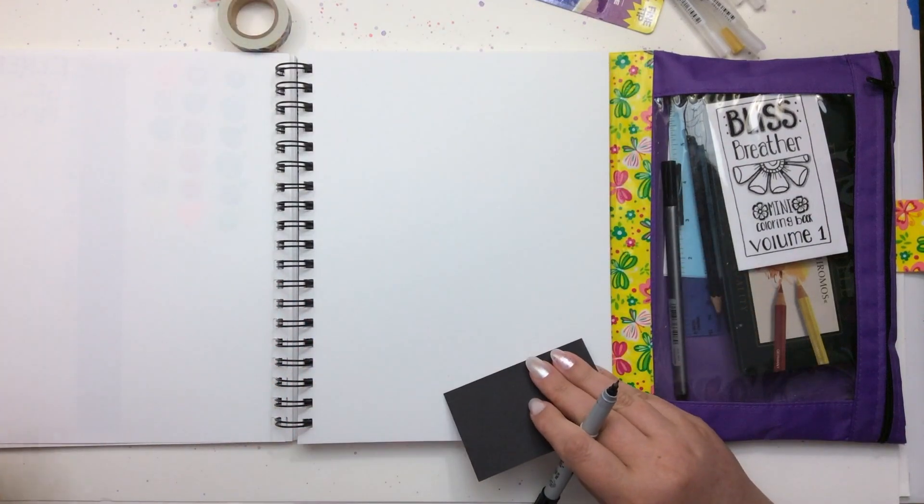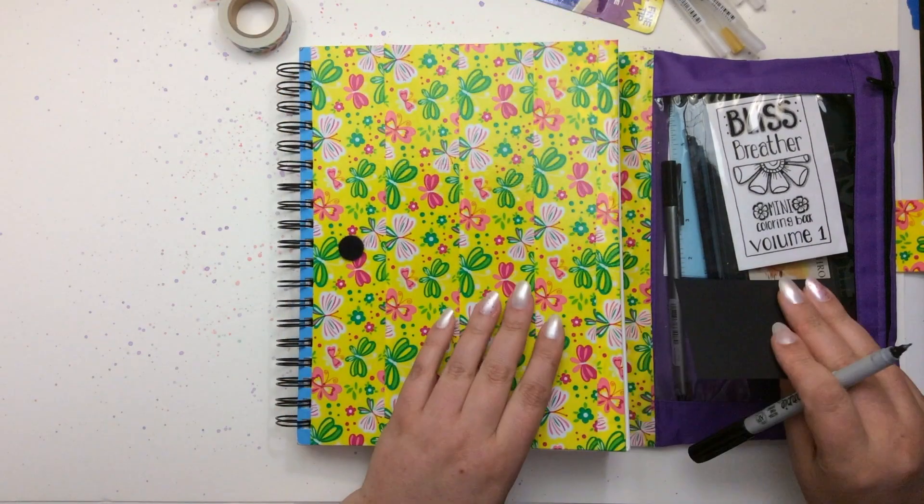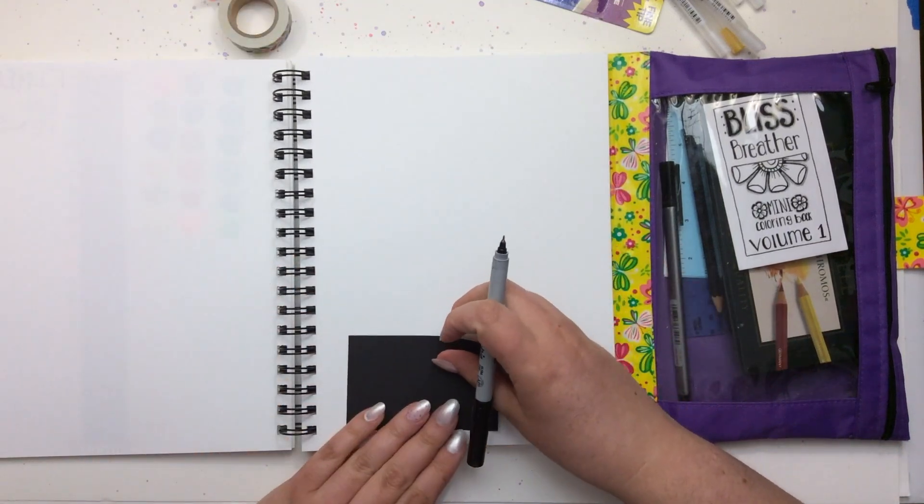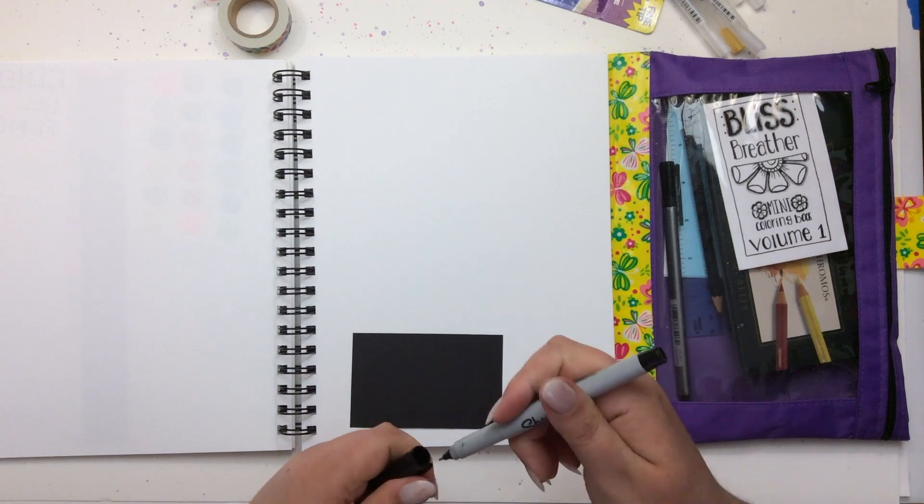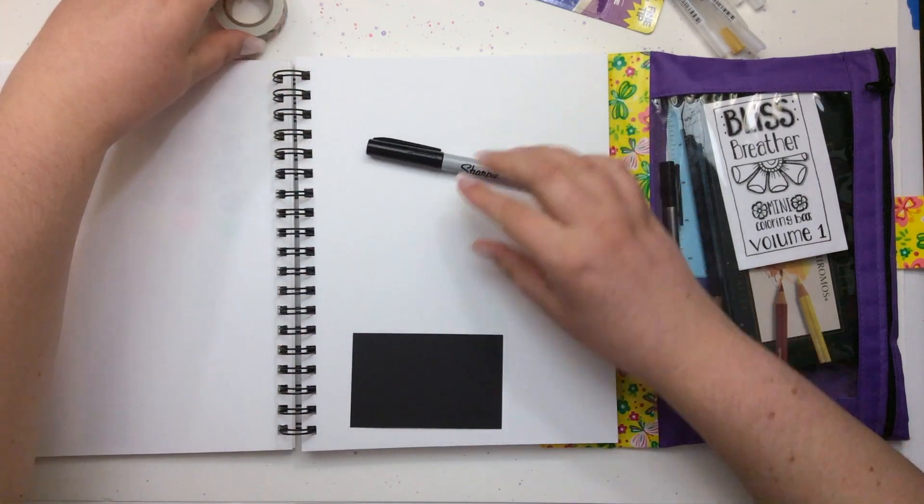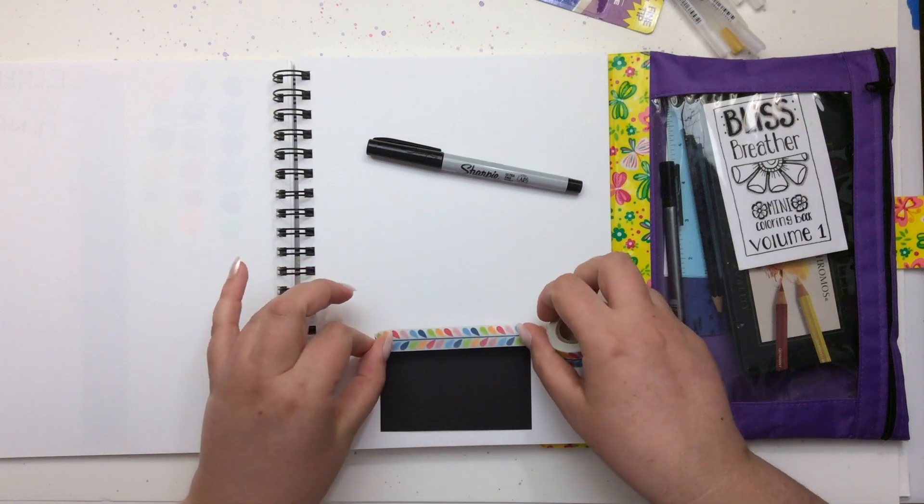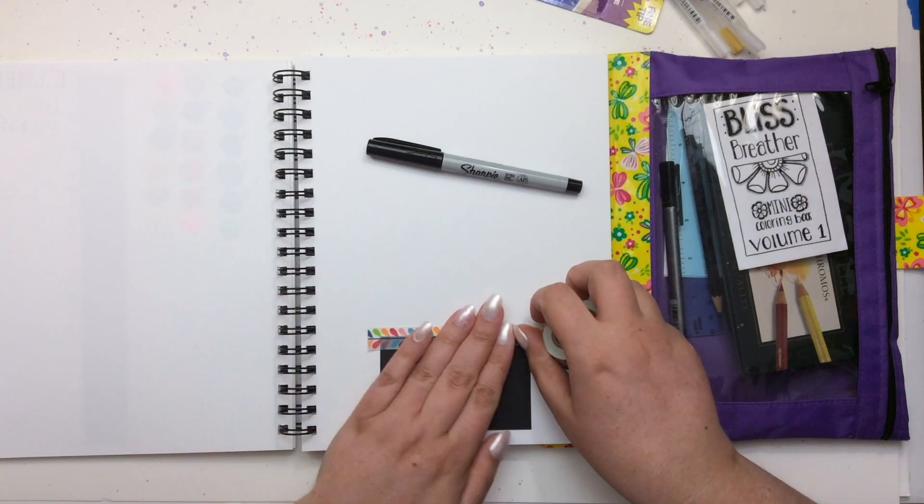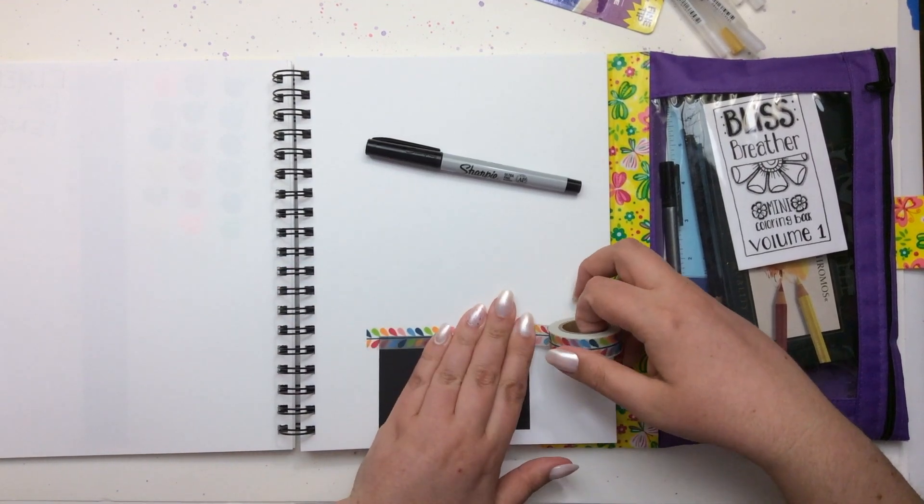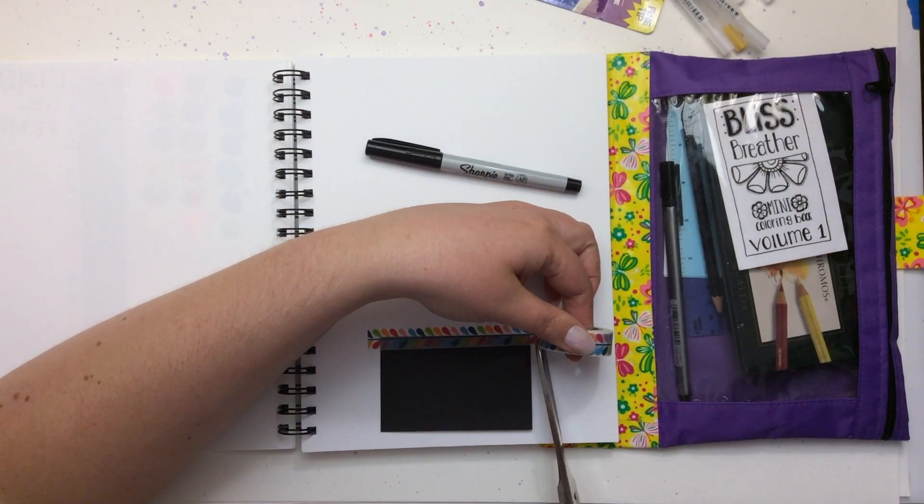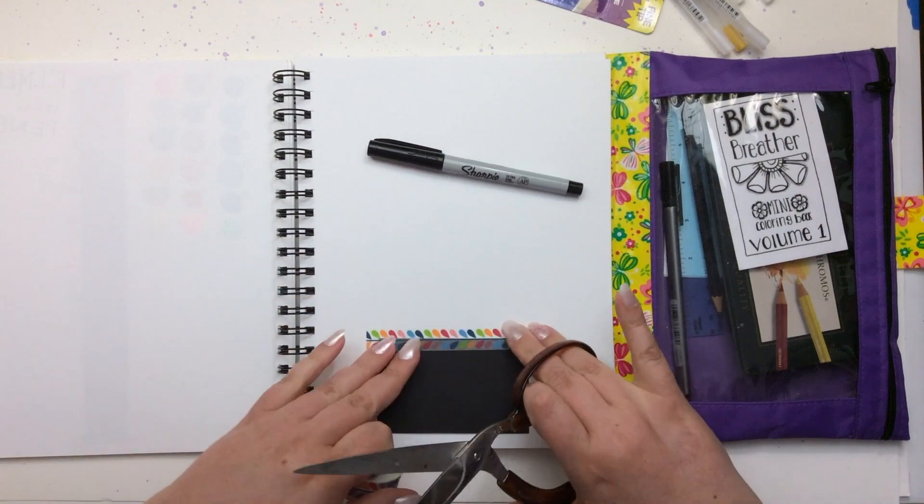Today I'm working inside my little sketch art kit that I showed how to make in another tutorial, so you can check that out. I'm going to tape in a little piece of black paper here to do the swatch for my white gel pen. I'm just going to use a cute little washi tape. There we go.